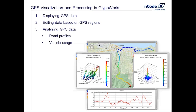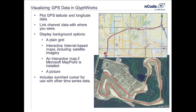I have a couple more slides here to set up these concepts, then I'll spend the bulk of the time actually using Glyphworks Live. How do we visualize GPS data in Glyphworks? There are two options shown here. The GPS display glyph plots your route with a map in the background, or a satellite image in the background — both are available inside the GPS display glyph, which I'll show you live in just a few minutes.